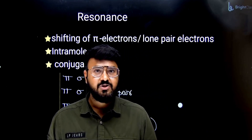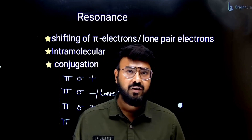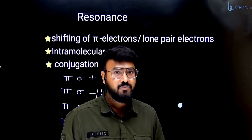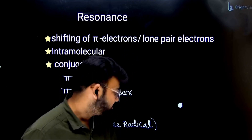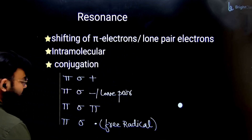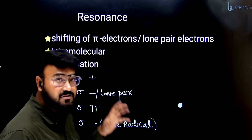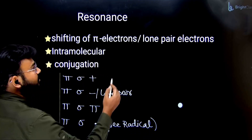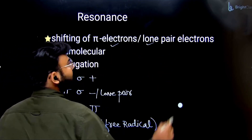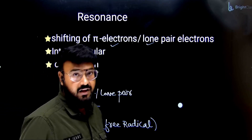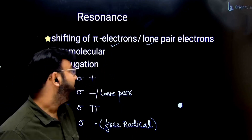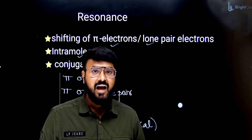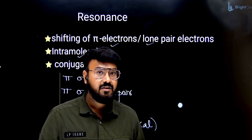So let's talk about it. Before we go into how to write the resonating structures, we need to know a few points about resonance. The first point is: resonance is about the shifting of pi electrons, or you can say lone pair electrons. Second, it is intramolecular — intramolecular means it happens within a molecule.